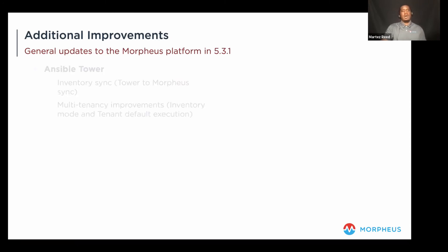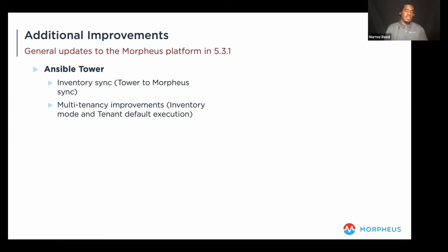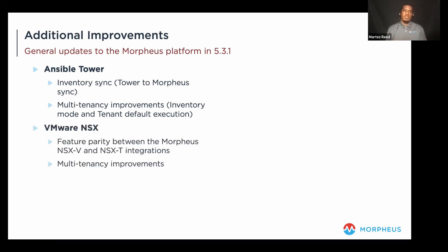Ansible Tower enhancements include inventory sync from Ansible Tower to Morpheus, improvements from a multi-tenancy standpoint via inventory mode, and a tenant default execution for multi-tenant environments — enabling governed execution from a master tenant to sub-tenants. There are also improvements to VMware NSX — another step toward feature parity between the Morpheus NSXv and NSXt integrations, as well as general improvements related to multi-tenancy.